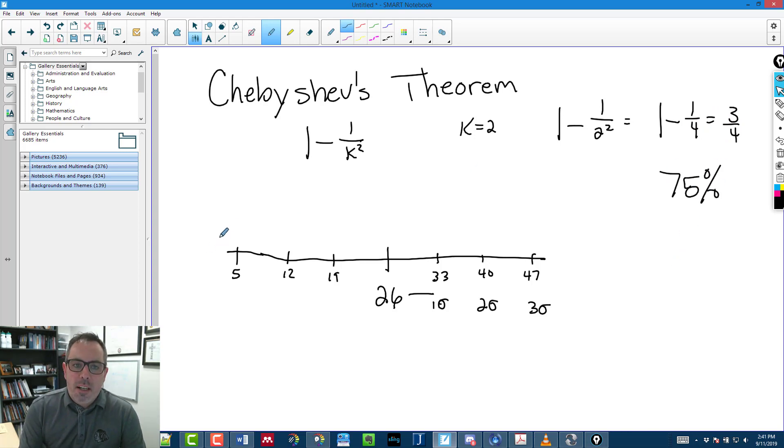Now, I don't know if this data is skewed one way or the other, and it doesn't really matter. Chebyshev's theorem works for any data, as long as we are talking about more than 1. So k has to be greater than 1, right? Otherwise, this thing kind of blows up.